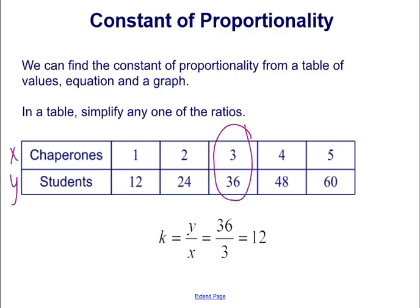So we're randomly going to pick, let's say, 3 and 36, 3 chaperones for 36 students. So K would equal Y over X, that ratio, in this case is 36 over 3, which simplifies to 12. So the constant of proportionality for this table is 12.